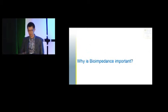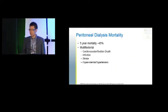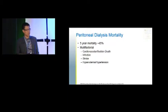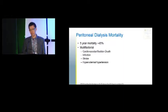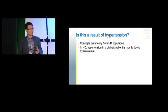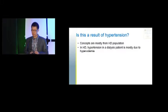Now we move to why bioimpedance is important in the peritoneal dialysis population. Mortality is really high in our dialysis population — in hemodialysis it's about 57% five-year mortality. Peritoneal dialysis is a little bit better, with about 45% all-comers five-year mortality. There are many reasons for this — cardiovascular, sudden death, infection, stroke — and there's now more evidence that this is from hypertension and hypervolemia, which is why bioimpedance is playing a role.